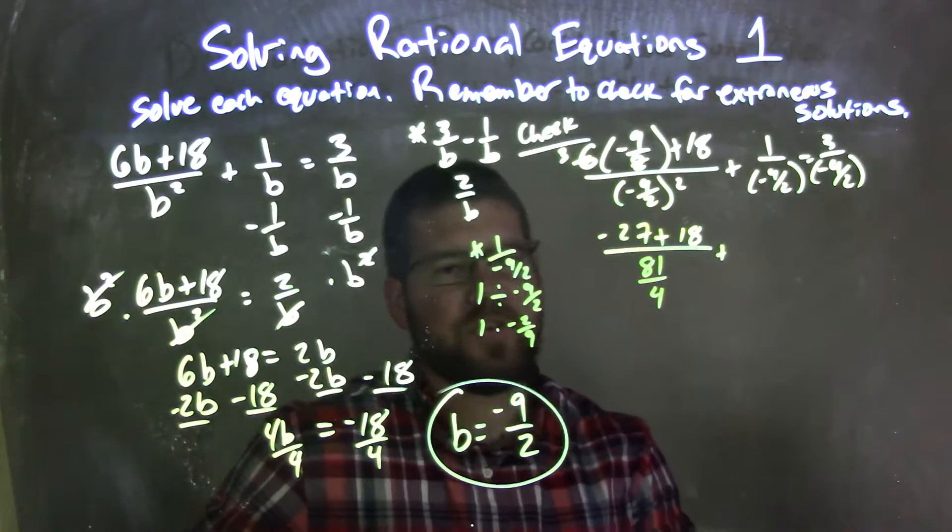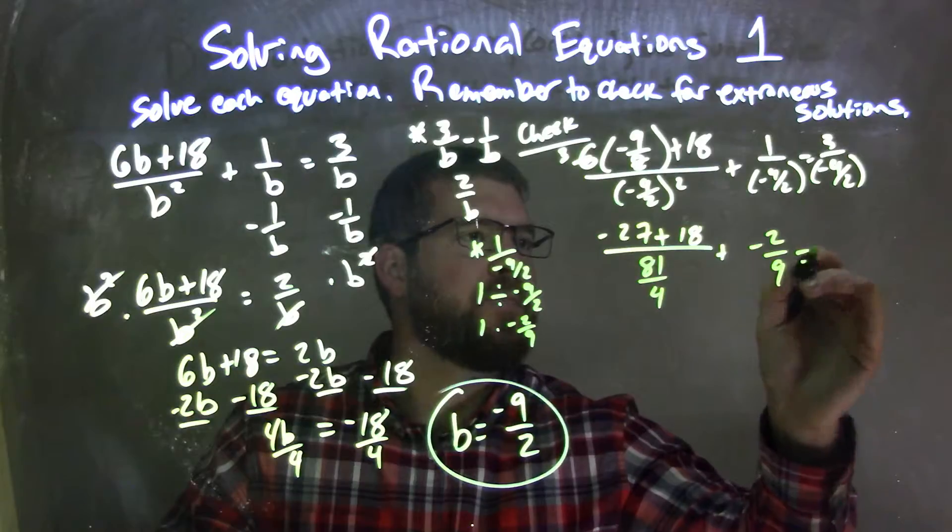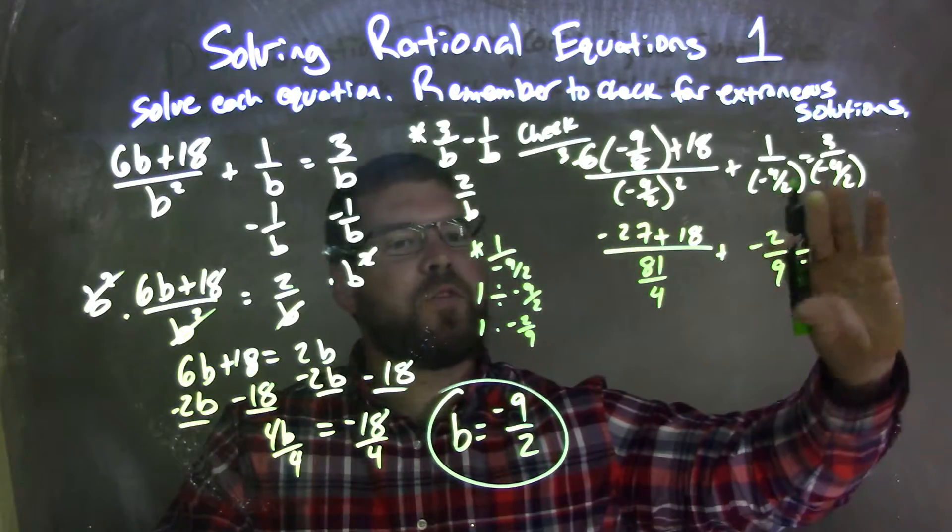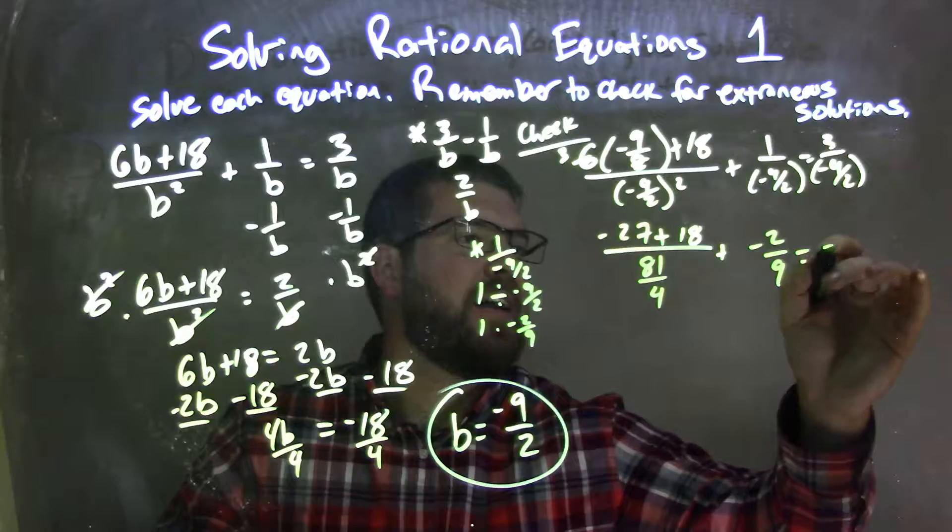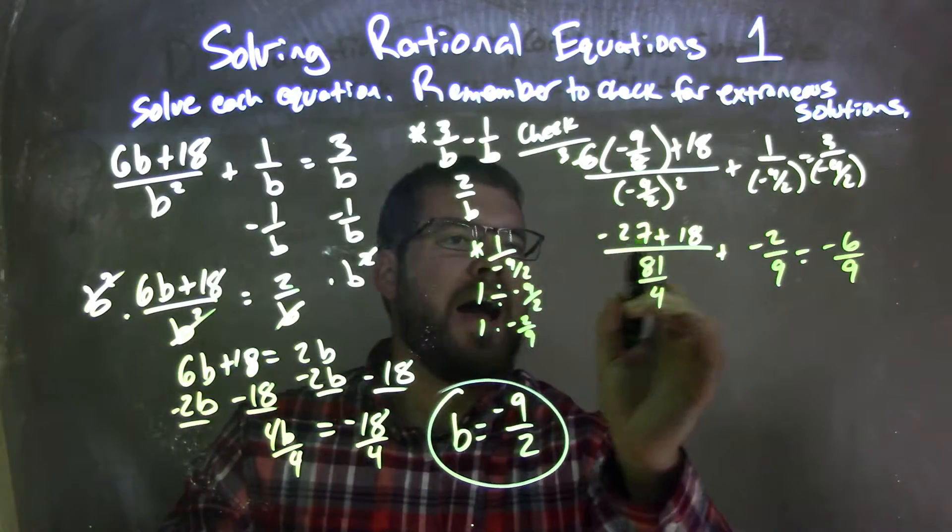And so now we just have negative 2 over 9 right there. And we can apply the same thing by flipping that over, multiply this right-hand side to get negative 6 over 9. So let's go add these two together.